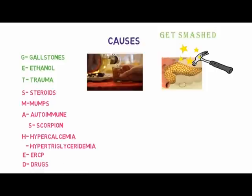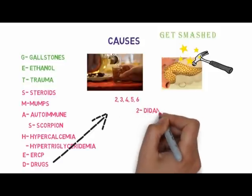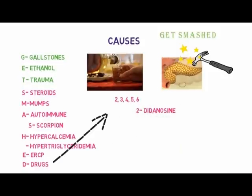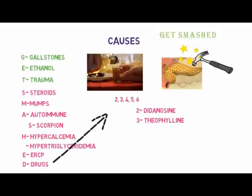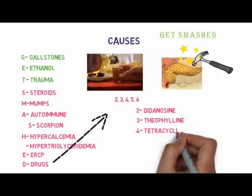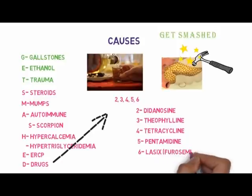The final E is for drugs. There are various drugs which can be responsible for acute pancreatitis. You can remember drugs by a mnemonic: 2, 3, 4, 5, 6. Two for didanosine — 'di' stands for two. Three for theophylline — remember this as 'threeophylline'. Four for tetracycline. Five for pentamidine. And six for Lasix, which is basically furosemide — it has a 'six' sound in it.